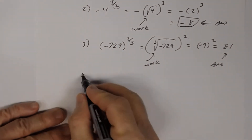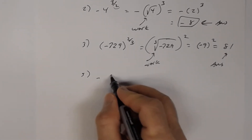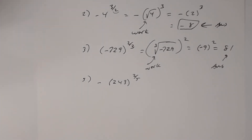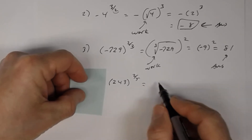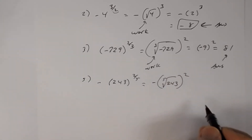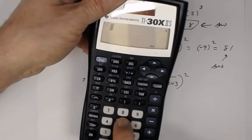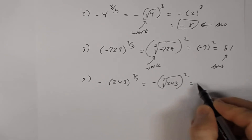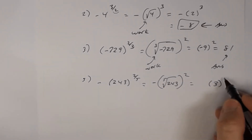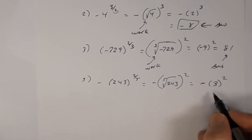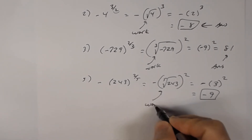Number 5: negative 243 raised to the 2/5. The negative is on the outside, so only 243 is being raised to the 2/5. This becomes negative times the fifth root of 243, squared. If you're not sure what the fifth root of 243 is, use your calculator: press 5, then second, root button, then 243, and you get 3. So this becomes 3 squared with the negative out in front — 3 times itself is 9 — giving negative 9.